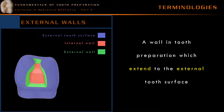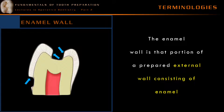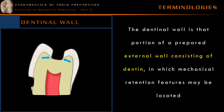An external wall is a wall in tooth preparation which extends to the external tooth surface. In the diagrammatic representation here, the green colored area is a prepared wall which comes in contact with the external tooth surface, and that is called an external wall. An enamel wall is the portion of the prepared external wall consisting of enamel. A dentinal wall is that portion of a prepared external wall consisting of dentine. The mechanical retentive features like grooves and locks are placed in the dentinal wall. The pulpal floor, which is made of dentine, is not called a dentinal wall because it is an internal wall.